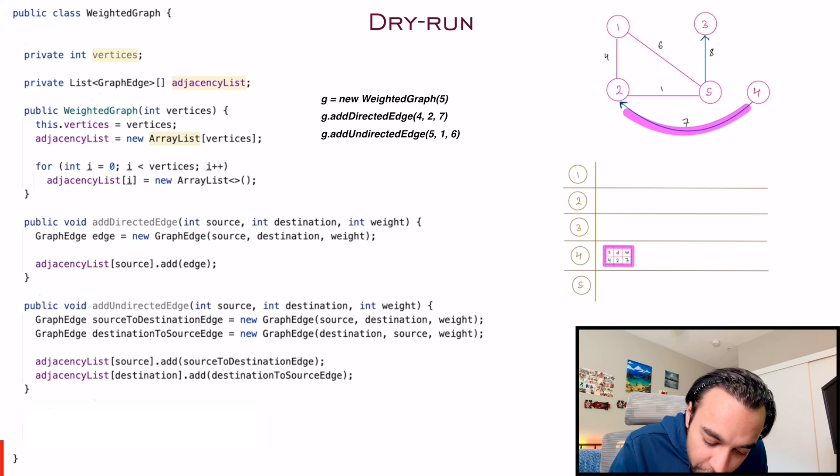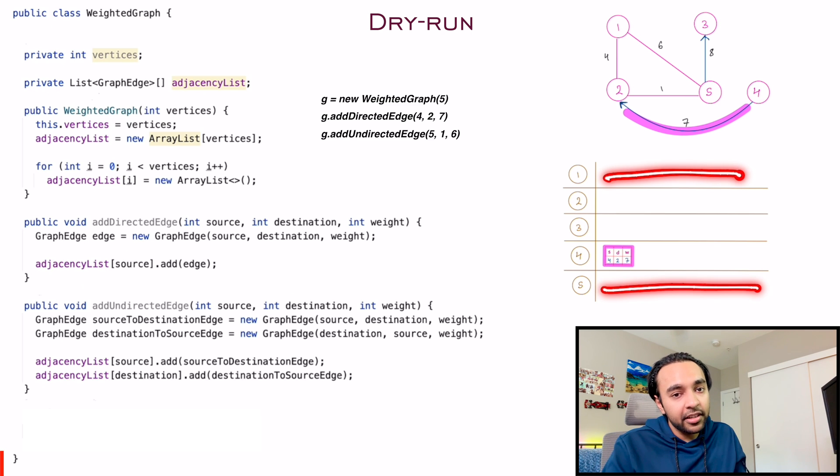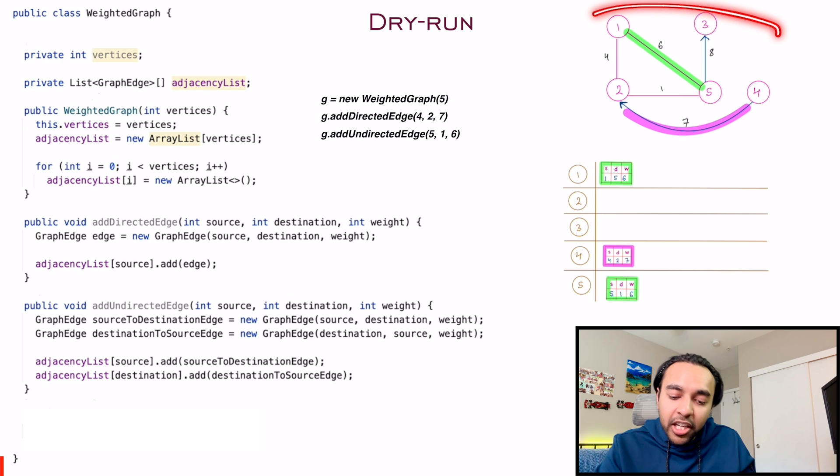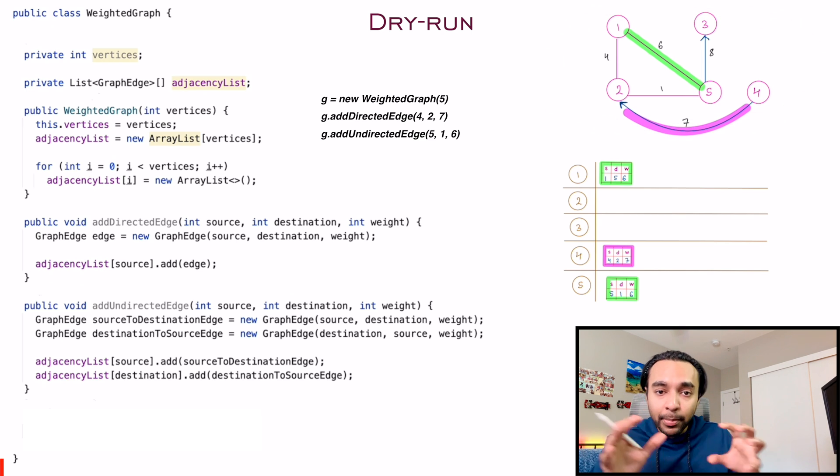And then you are going to add both of these two new edges to both the source and the destination adjacency list. So right now your source was five and the destination was one. So you will add an object over here and then you will add an object over here. So that is how you are going to proceed ahead. And then you can represent your entire graph just by using edges.